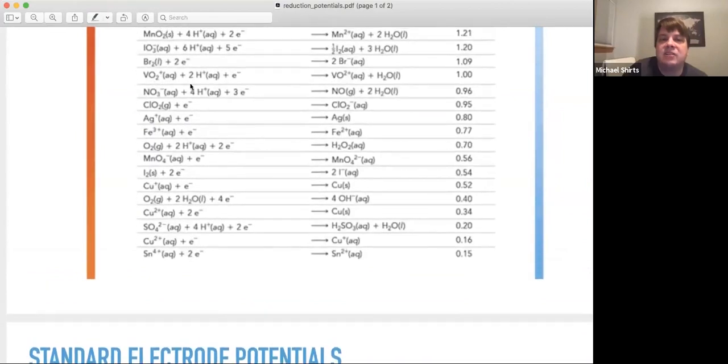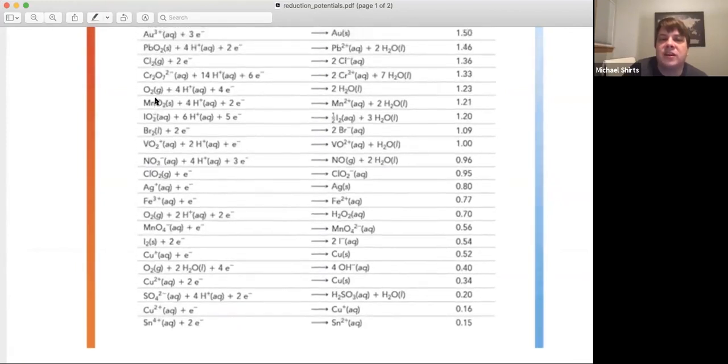Now let's look at nitrate. So nitrate is above silver, iron, copper, and so it will dissolve those because you will get a reduction there.